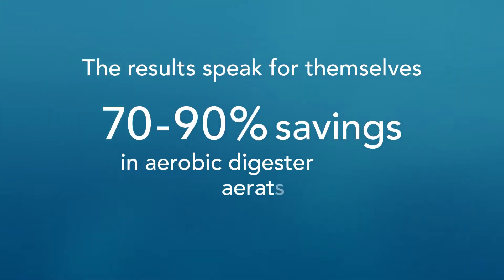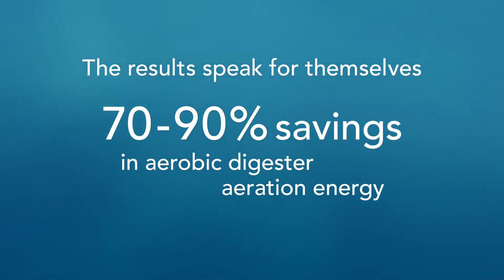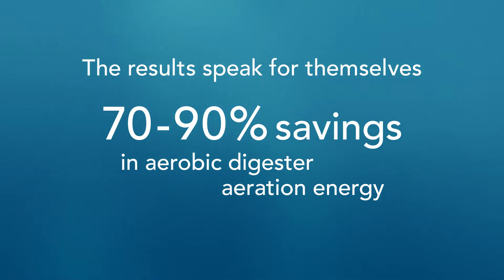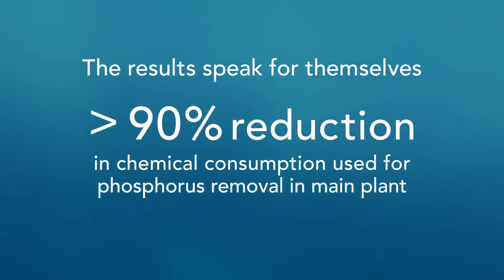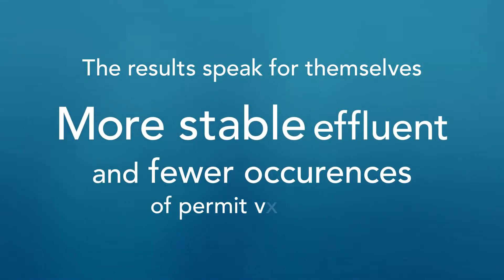The results speak for themselves. Between 70 to 90% savings in aeration energy, depending on loading rates. Greater than 90% reduction in phosphate returned to the main treatment plant. Greater than 90% reduction in the chemical consumption used for phosphorus removal in the main plant. And much more stable effluent, with far fewer occurrences of potential effluent permit violations.